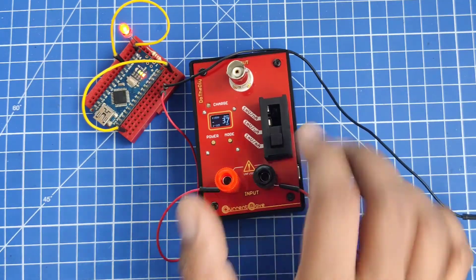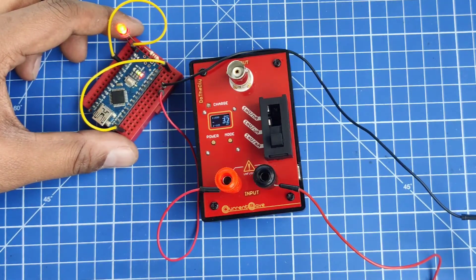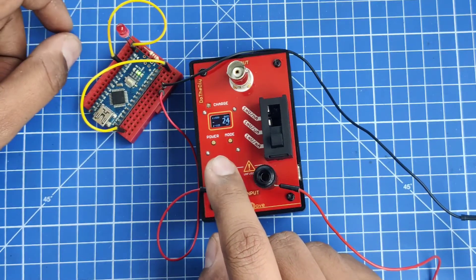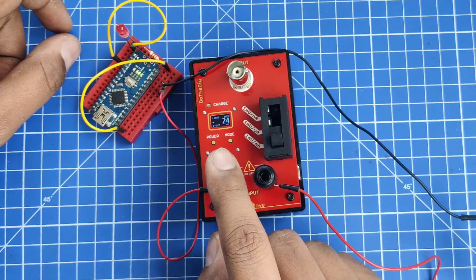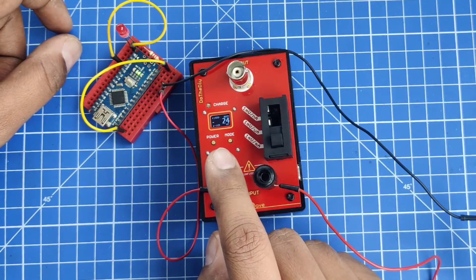Here you can see this board is basically running a blink sketch. You can see when the LED is switched on, the power consumption is around 37 milliamps, and when it's switched off, it's consuming around 25 milliamps.